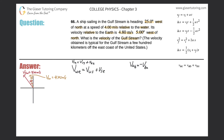Since we know the velocity of the ship relative to the water, to find the velocity of the water relative to the ship, we just negate all the x components and all the y components. It's as simple as that.